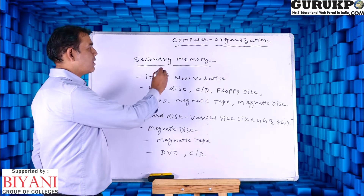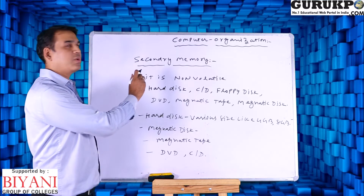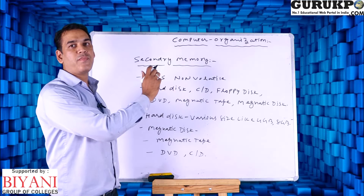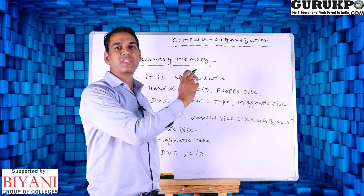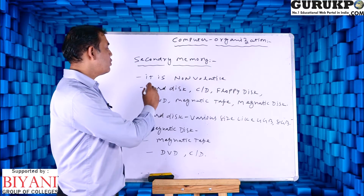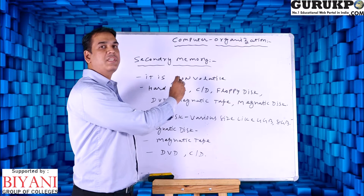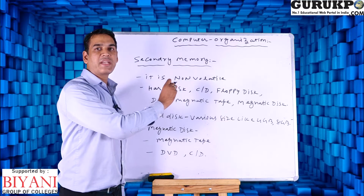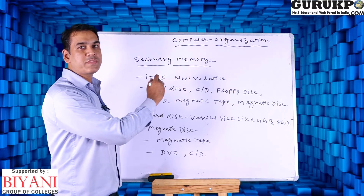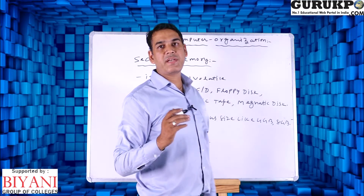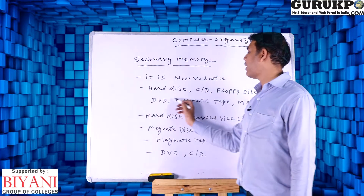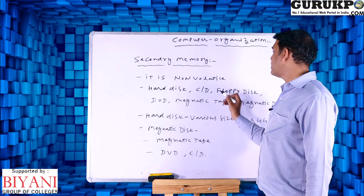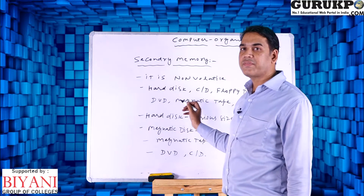Let us discuss secondary memory. What is secondary memory? Basically, secondary memory is non-volatile memory, meaning if power is gone, the data will remain stored in the computer. Examples of secondary memory include hard disk, CD, DVD, floppy disk, magnetic tape, and magnetic disk — all of these retain data after power is lost.